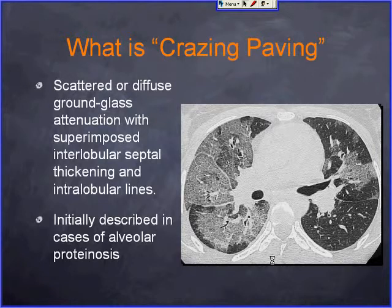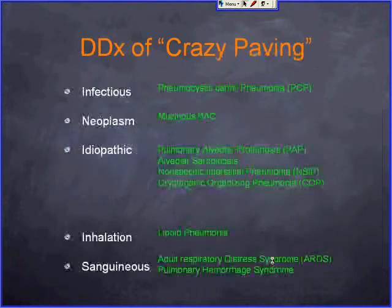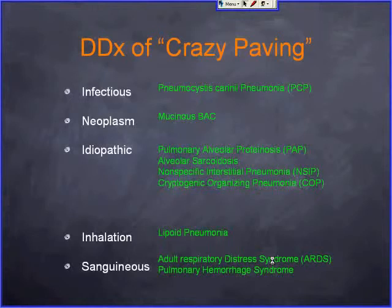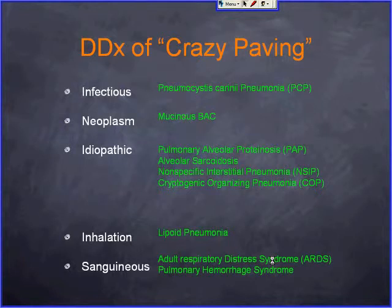This pattern was initially described in the case of pulmonary alveolar proteinosis and was thought to be specific to it. It was later found that it can be demonstrated in multiple disease processes. The differential diagnosis is fairly short and includes infectious, neoplastic, idiopathic, inhalational, and sanguineous disorder categories.